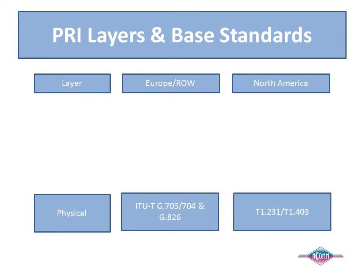For North America, the most important standards for PRI ISDN operation are T1.231 and T1.403. Please note that a full implementation of Layer 1 does depend on compliance to additional standards, and let us know if you'd like more information on these.